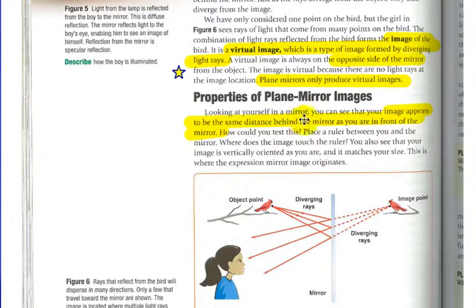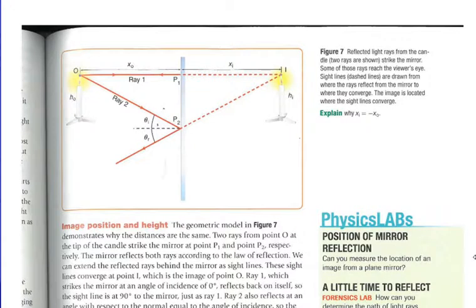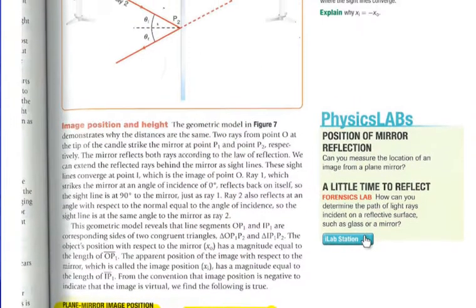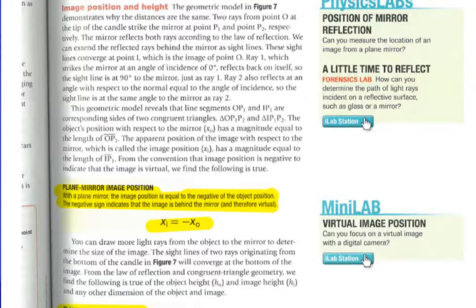Properties of Plain Mirror Images. Looking at yourself, you can see that your image appears to be the same distance behind the mirror as you are in front of the mirror. How could you test this? You could do it experimentally. In fact, in the labs that you would have done, you did that. So here we could simply measure, use a pen, make a dot where the image appears to be, and do all the measurements and work it out that way.